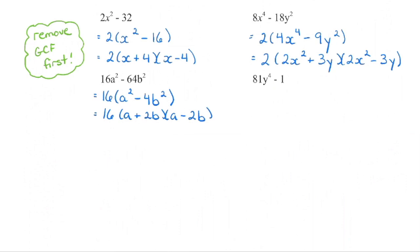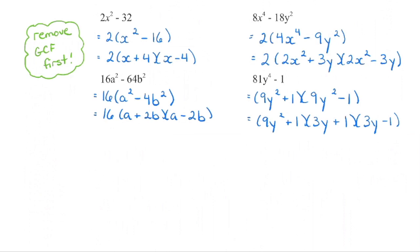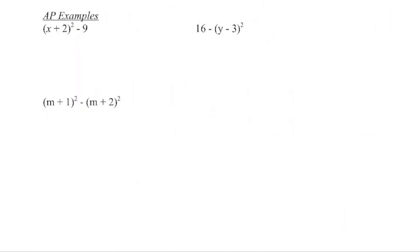We have a difference, both are perfect squares — set up the conjugates. Now check: can we factor further? The sum bracket is done since it's a plus. The difference bracket needs more work since it's a minus, so we set up conjugates again and check if those factor further. We have 1 as a perfect square, but 3y is not, so that is the final answer.